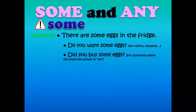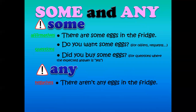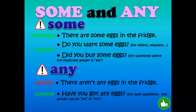Some and any — look at the general rules. 'Some' is used with affirmative sentences: there are some eggs in the fridge. Also in questions to offer or request: do you want some eggs? And for questions where the answer is yes: do you want to buy some eggs? Three rules: some is used for affirmative sentences, for offering questions, and for questions where you know the answer is going to be yes. 'Any' is used for negative sentences and for open questions: there aren't any eggs in the fridge; have you got any eggs? The answer can be yes or no.